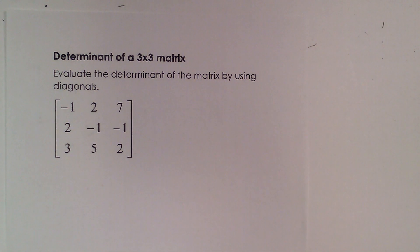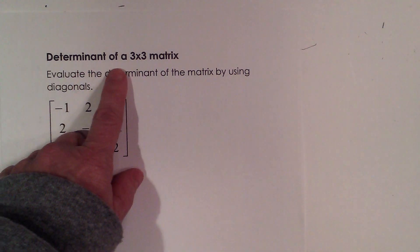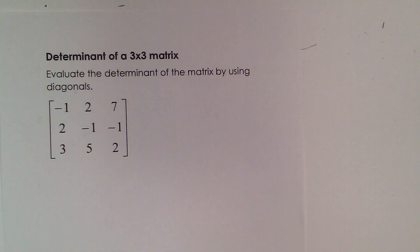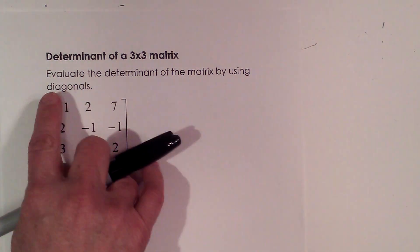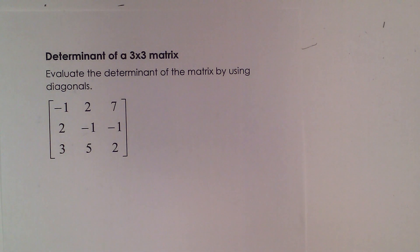Hi, welcome to Moo Moo Math. Today we're going to learn how to find the determinant of a 3x3 matrix. Now a 3x3 is a little more involved than a 2x2. We're going to use the method of diagonals. There actually are two different methods for doing this one, but we're going to use the diagonal method.